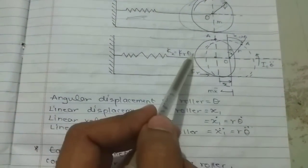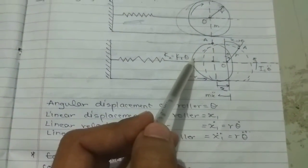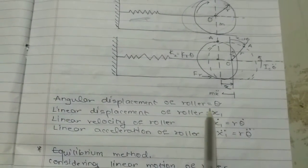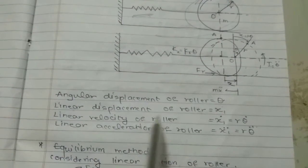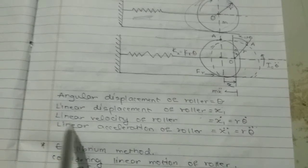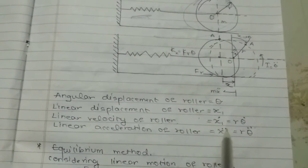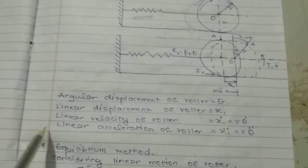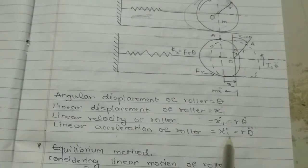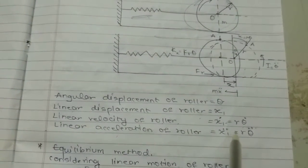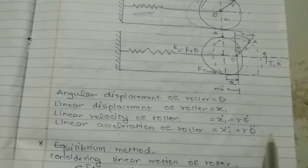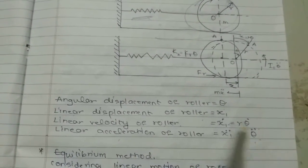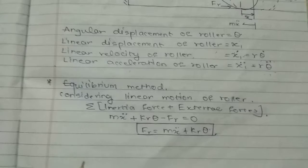We have to find the new frequency. Now we denote: angular displacement of roller equals theta, linear displacement of roller is x1, linear velocity of roller x1-dot equals r*theta-dot, and linear acceleration of roller x1-double-dot equals r*theta-double-dot. Now first we solve it using the equilibrium method.